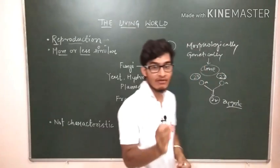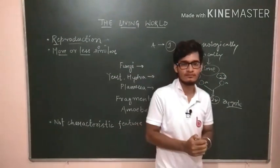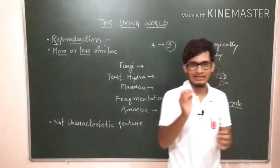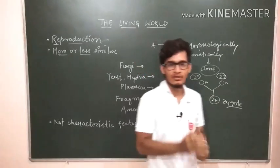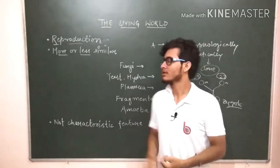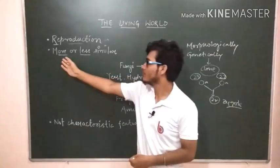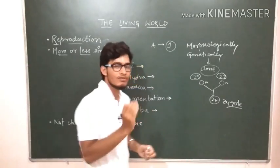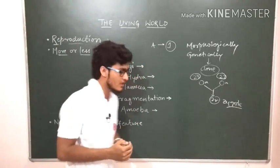There will be crossing over and different phenomena which will create variation. So I'm not alike my father and my father was not exactly similar to my grandfather because some sort of variations are there. Therefore it is called more or less similar - sometimes it is not exactly the same copy.